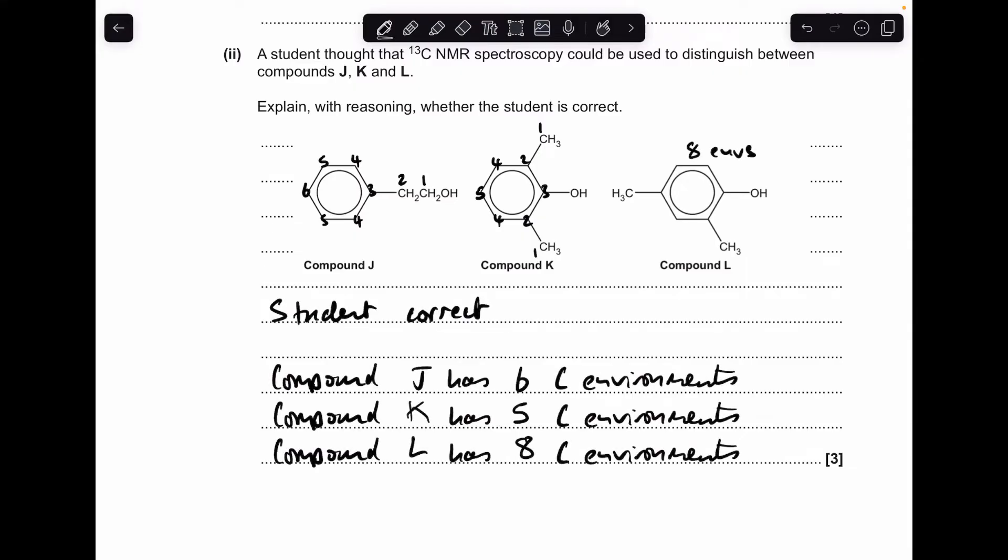So that's what I'd be writing up. The student's correct, compound J has six carbon environments, K has five and L has eight.